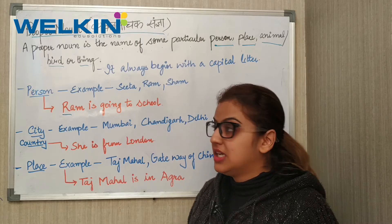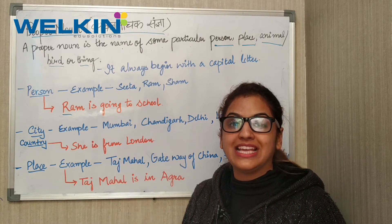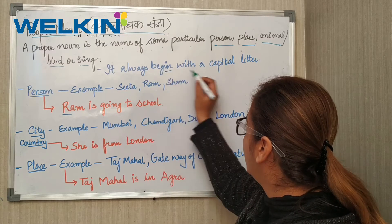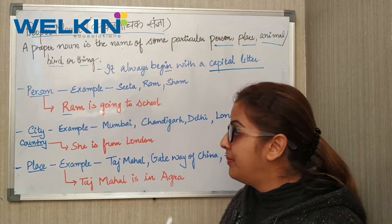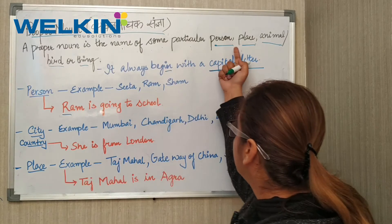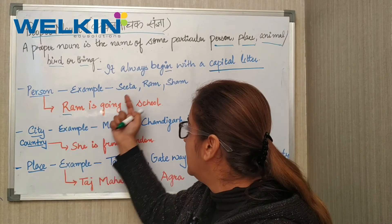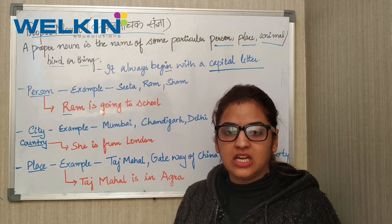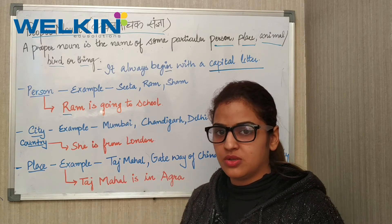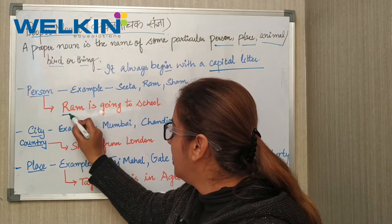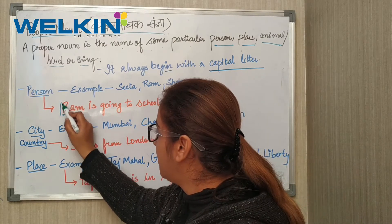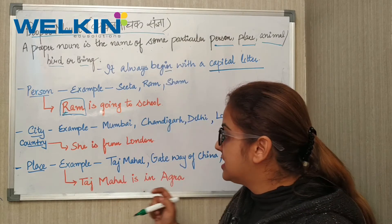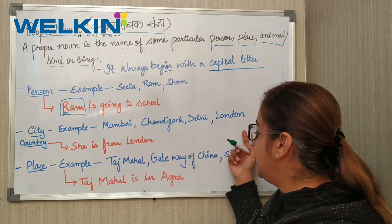How do we recognize proper nouns? A proper noun is the specific name of a person. For example, Ram — if Ram is going to school, Ram is the name of a particular person. Other place examples include Mumbai, Chandigarh, Delhi, and London.